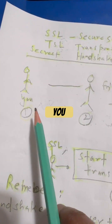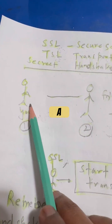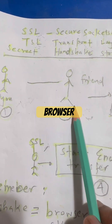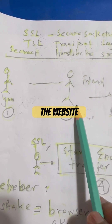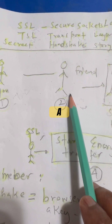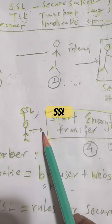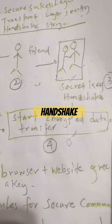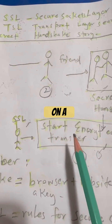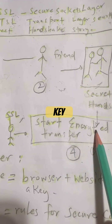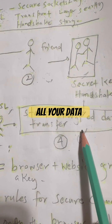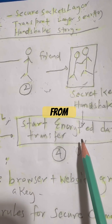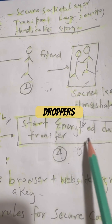When you open a website, your browser and the website perform an SSL or TLS handshake. So they agree on a secret key. After that, all your data is sent in encrypted form, safe from eavesdroppers.